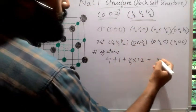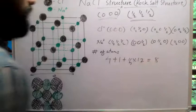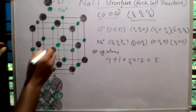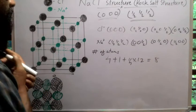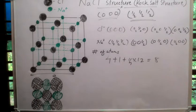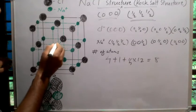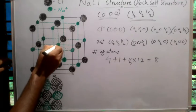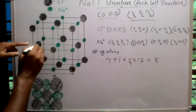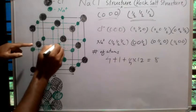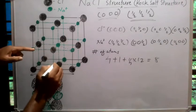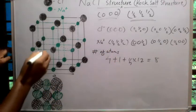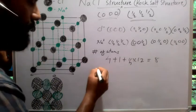The total number of atoms in a sodium chloride unit cell is equal to eight. Now let's count the number of nearest neighbors. Taking the central atom as the reference, counting: one, two, three, four, five, six — there are a total of six nearest neighbors.